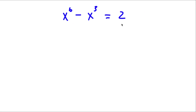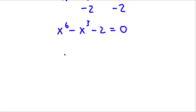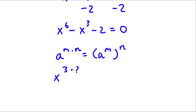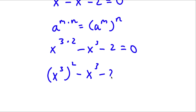Alright, the first thing I'm going to do is subtract 2 on both sides, giving x to the power of 6 minus x to the power of 3 minus 2 equals 0. Now using the rule that a to the power of m times n equals a to the power of m to the power of n, I can rewrite x to the power of 6 as x to the power of 3 times 2, which equals x to the power of 3 squared. So I have x to the power of 3 squared minus x to the power of 3 minus 2 equals 0.